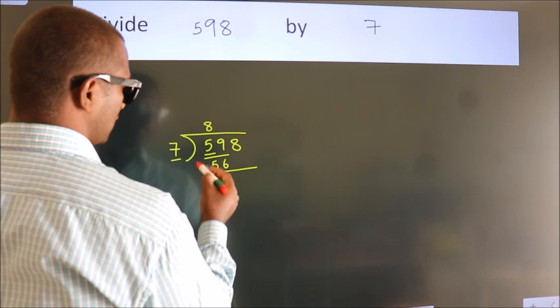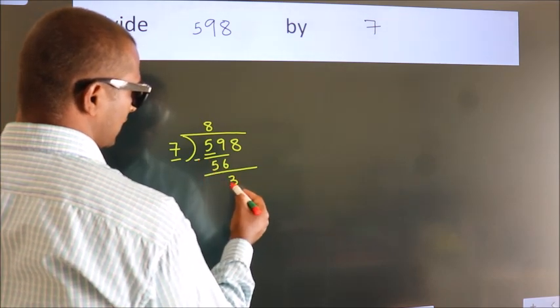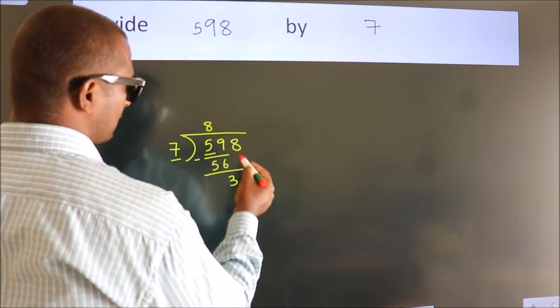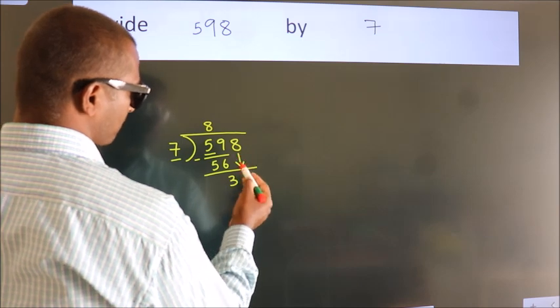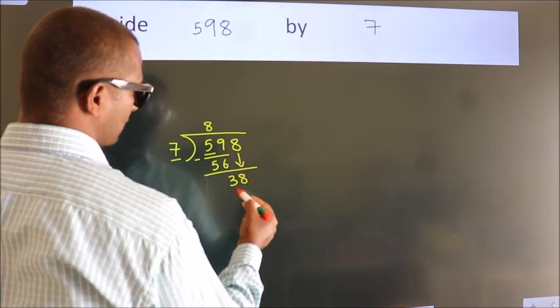Now we should subtract. We get 3. After this, bring down the beside number. So, 8 down. So, 38.